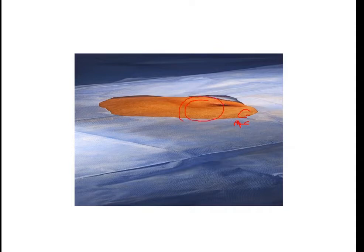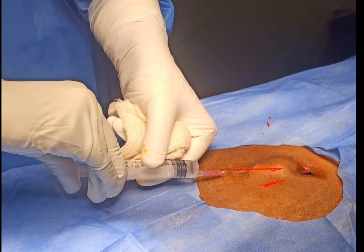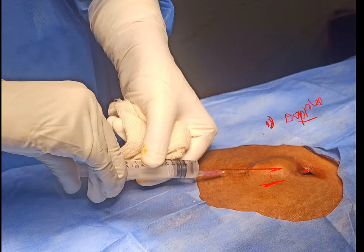Only the operating area — umbilicus and below — remains visible. The incision is usually made one to two centimeters below the umbilicus or just lateral to the umbilicus. In some centers, a Doppler is used to locate the inferior epigastric artery to avoid bleeding complications and to check for any blood vessels in that area before making the incision.